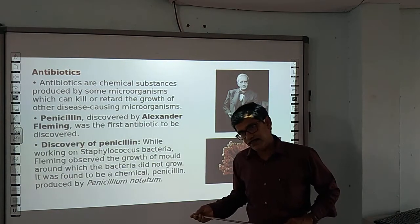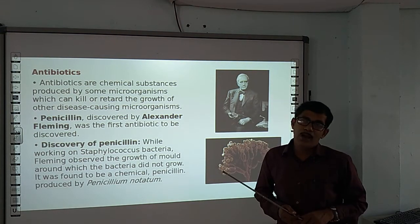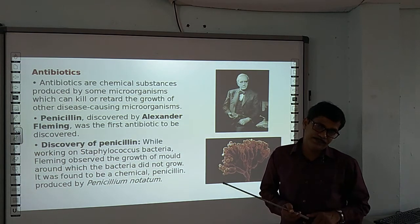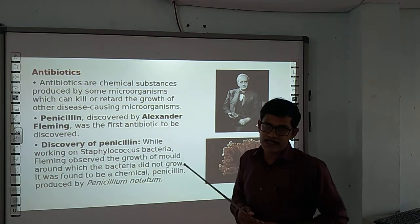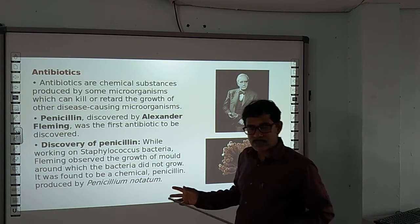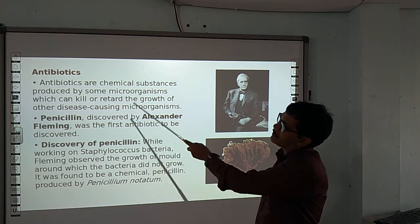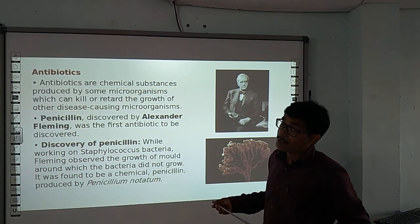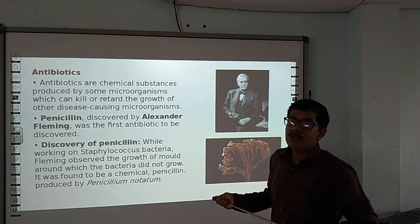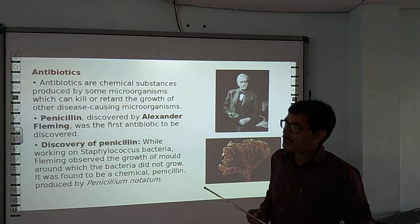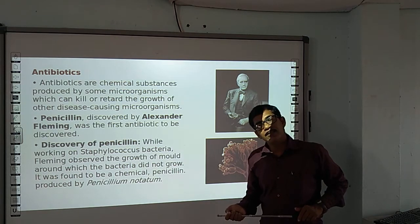Now, antibiotics. Antibiotics are a type of chemical which kill microbes. Antibiotics are chemical substances produced by some microorganisms. In the context of microbes in human welfare, different types of antibiotics are prepared from microbes, which can kill or retard the growth of other disease-causing microbes.